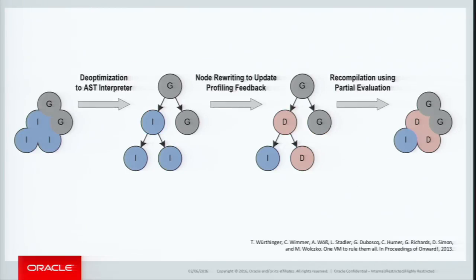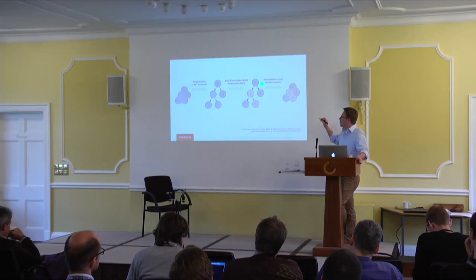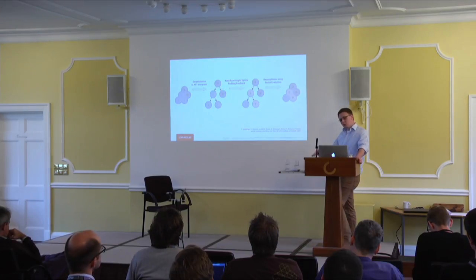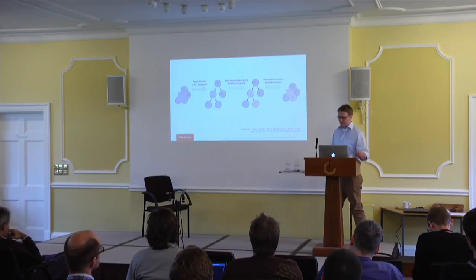You get all the benefits of producing really efficient machine code. The only bit you have to do is worry about updating your AST — the de-optimization and the recompilation are all done for you, more or less transparently.